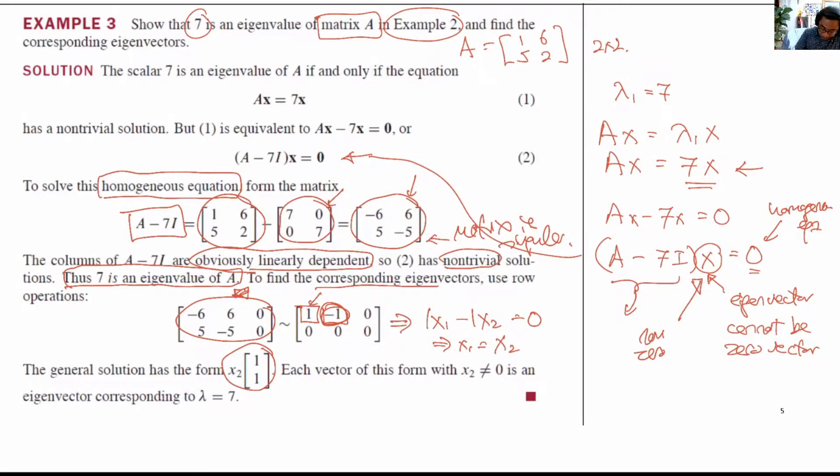Maybe to convince yourself, let's try a concrete example. [1, 5; 6, 2] multiply by [1, 1]. And we will get [7, 7].